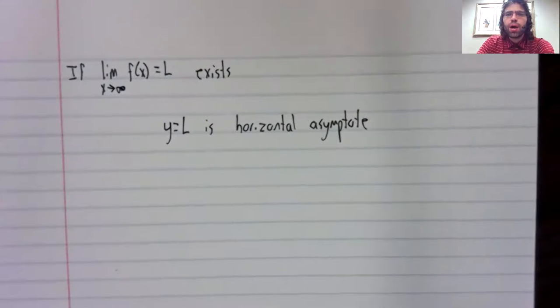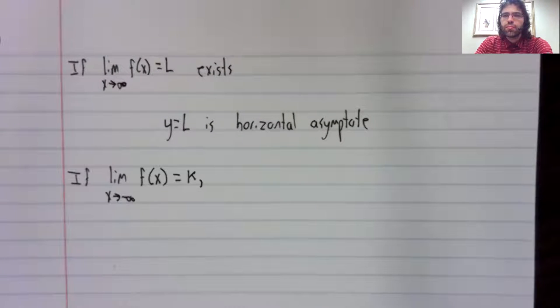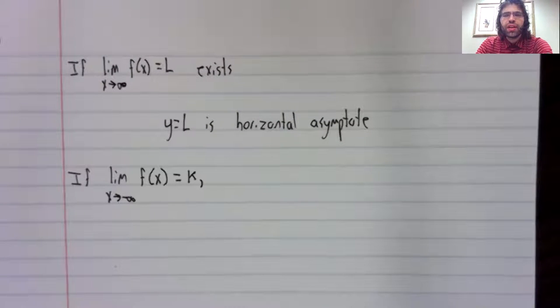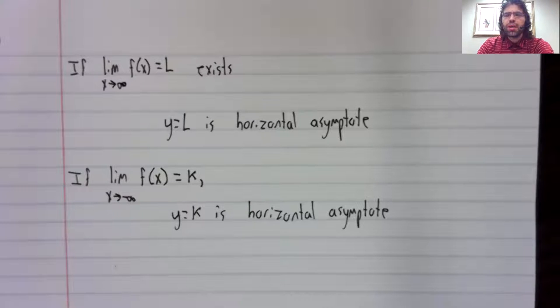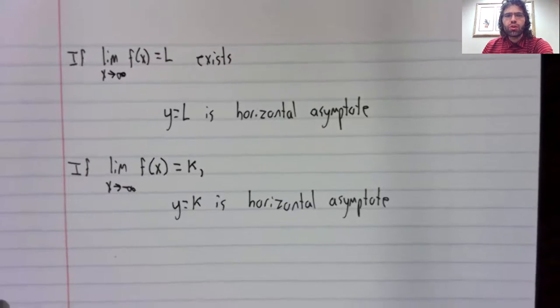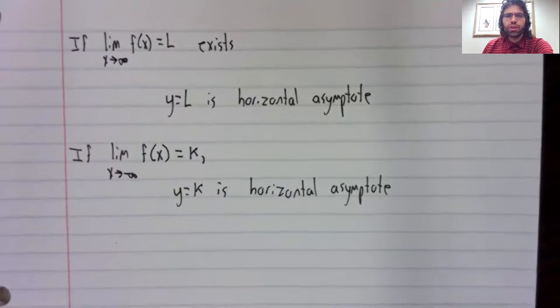And likewise, if the limit as X approaches negative infinity exists, that limit is a horizontal asymptote.